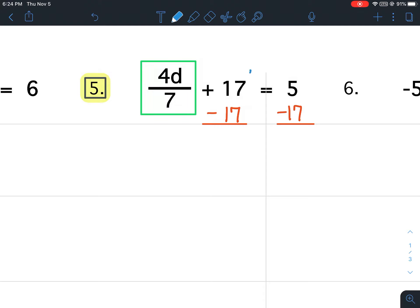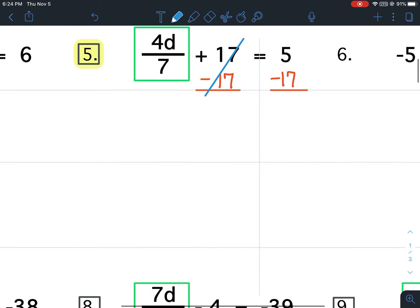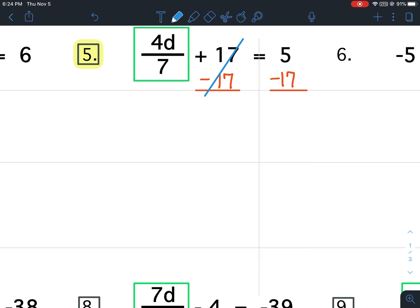That allows me to cancel the 17s. And now, when I bring down this fraction, I'm going to bring it down as 4 7ths with the d beside it. It's the same thing. So bring it down as 4 7ths with the d written beside it. And that is going to equal, well, 5 minus 17 is negative 12.